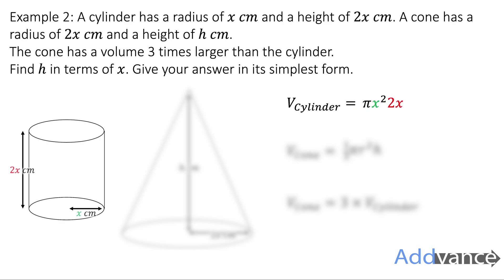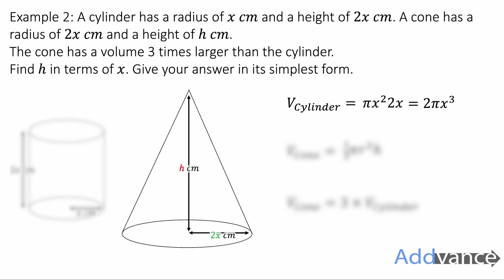We replace the radius and the height with the radius and the height from the picture, and we simplify and we get 2πx³. Now for the volume of the cone, we replace the radius with 2x and the height with h, which becomes like this. And 2x squared is the same as 4x². 2x squared in brackets is the same as 4x². That simplifies nicely to ⅔πx²h.